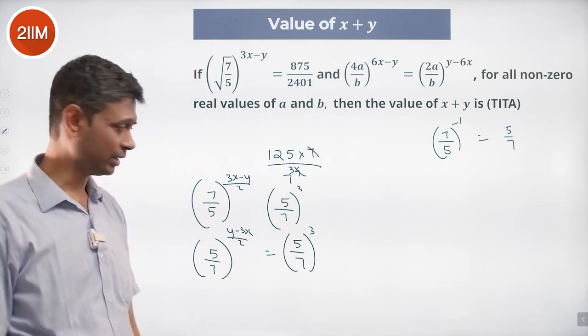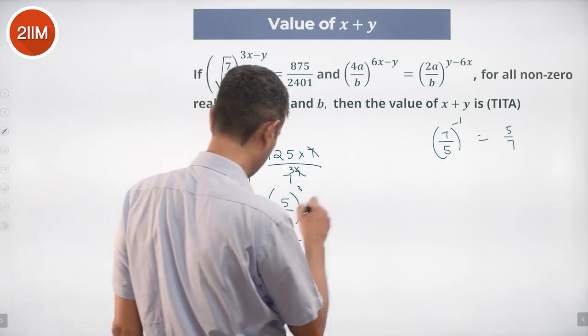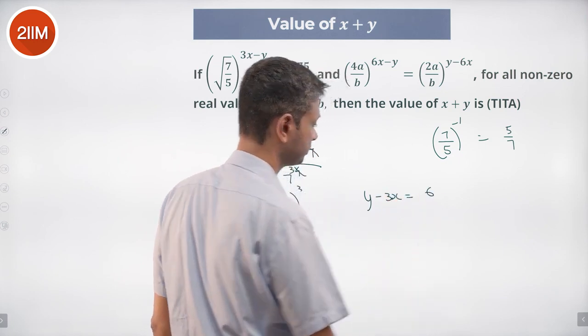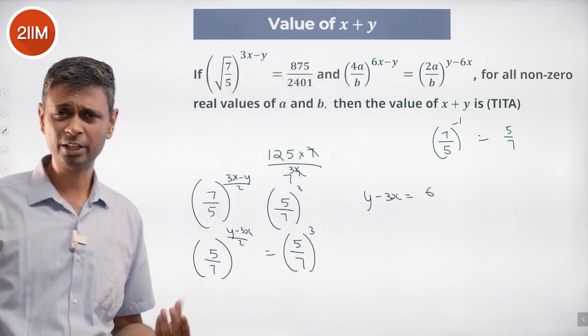Beautiful question because you have to crack that thing. Y minus 3x by 2 is this, y minus 3x is equal to 6.